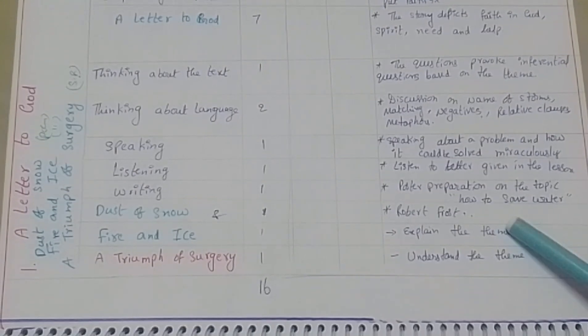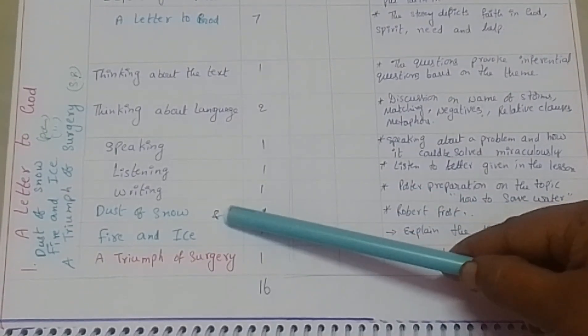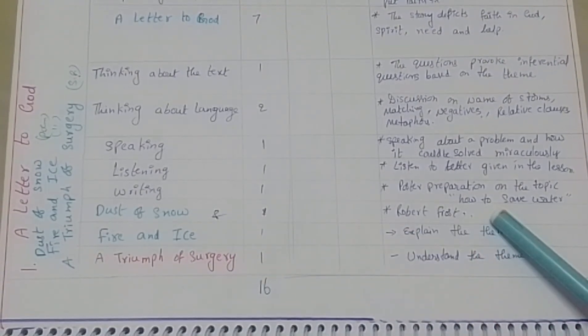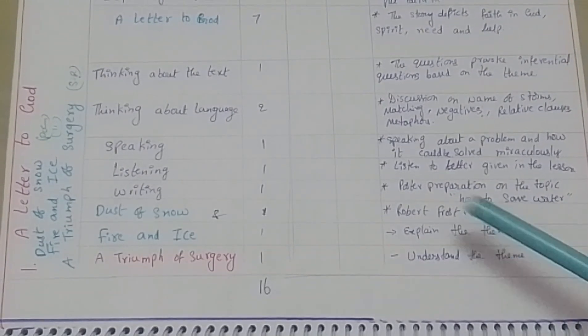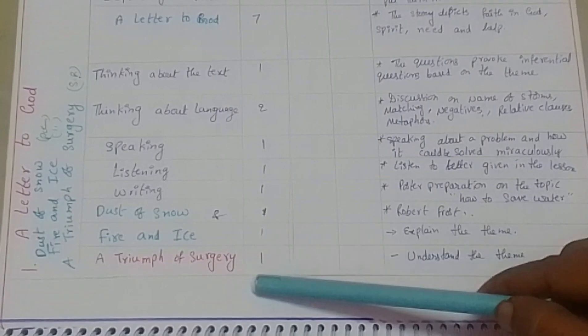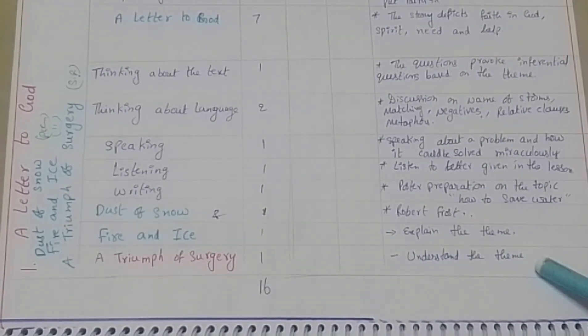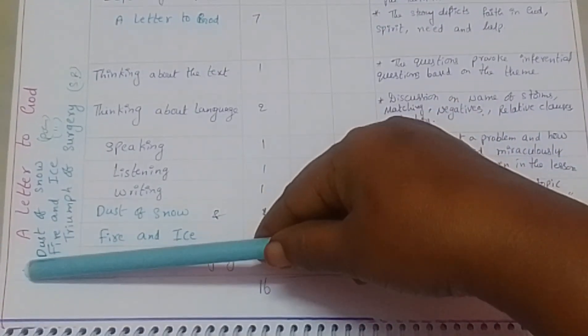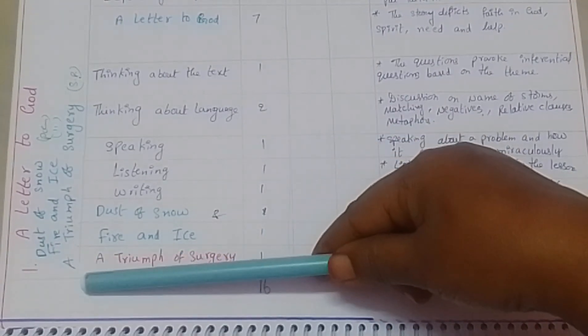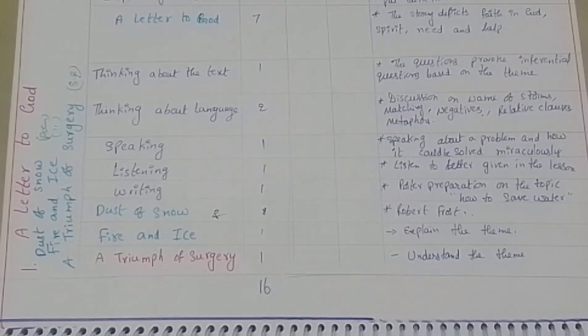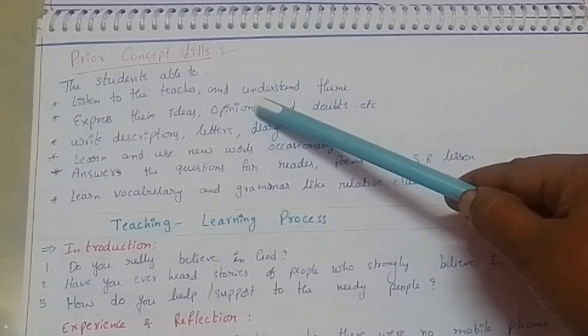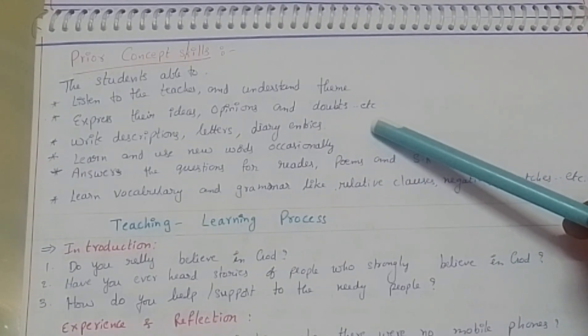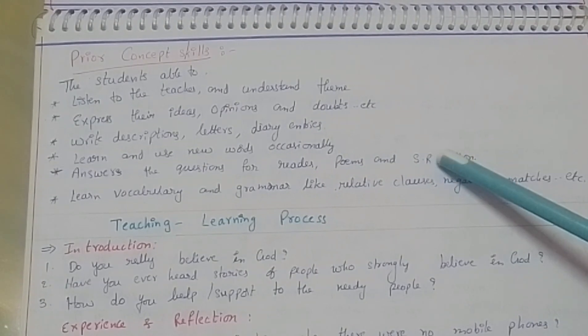Poster preparation on the topic how to save water. For the poems Dust of Snow and Fire and Ice, we need one period. We explain about the poems, about the poet, and explain the theme. Supplementary lesson - we introduce here and explain the summary of the supplementary lesson. We write the topics here for the first unit: the reader lesson A Letter to God, poems Dust of Snow and Fire and Ice, and the supplementary lesson A Triumph of Surgery. Prior concepts - the students are able to listen to the teacher and understand the theme, express their opinions, ideas, and doubts, write descriptions, letters, diary entries, learn and use new words, answer the questions for reader poems and supplementary lesson, learn vocabulary and grammar like relative clauses, negatives, matches, etc.